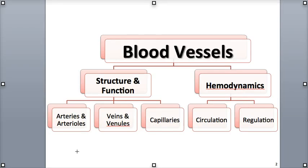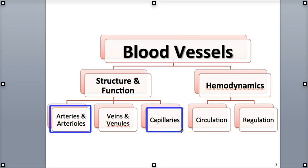There are five main types of blood vessels: the arteries and arterioles, the capillaries, and the venules and veins.